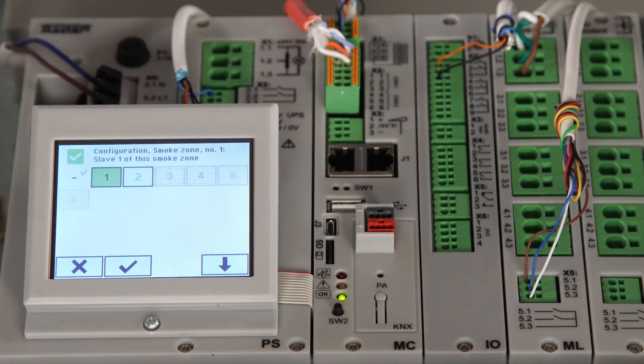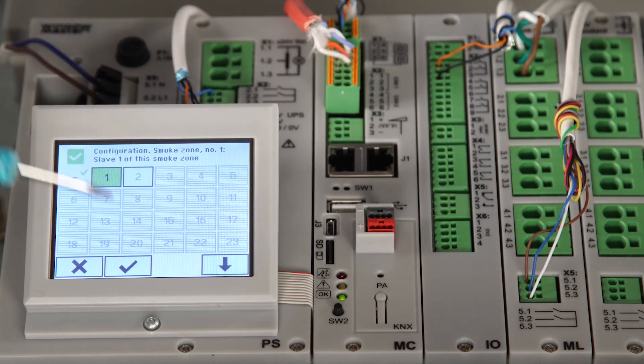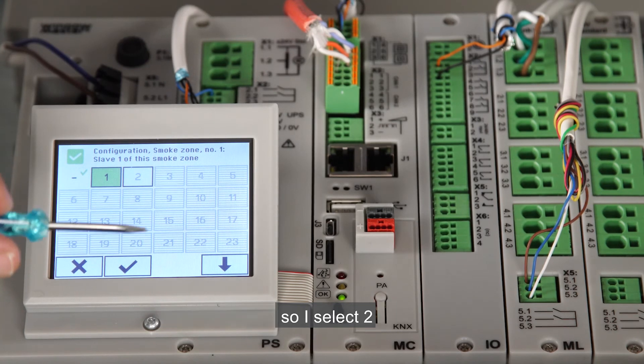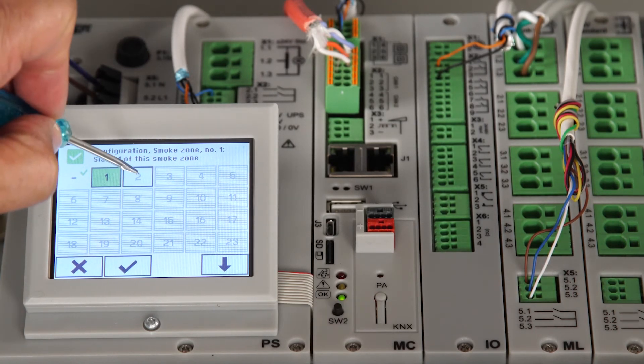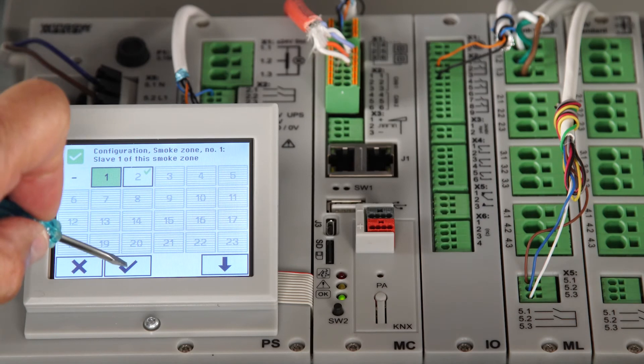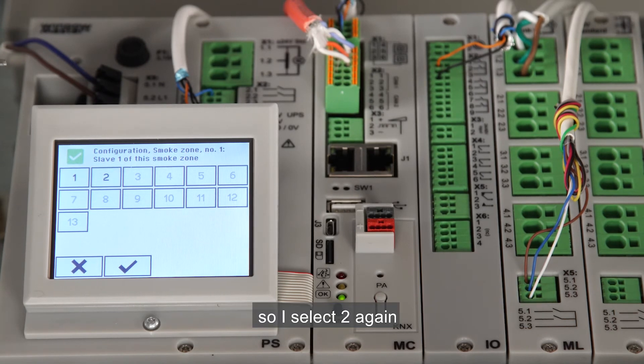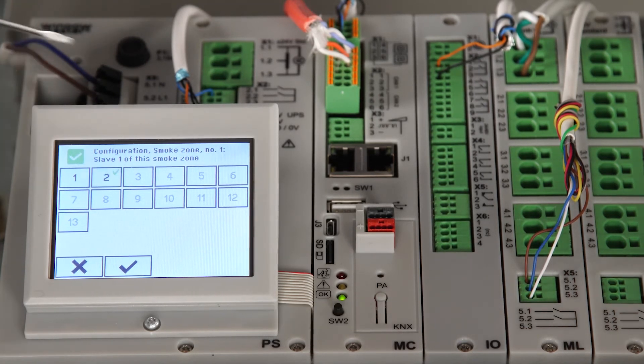I know that the CAN ID in the slave panel is 2, so I select 2. The smoke zone implemented in panel 2 is smoke zone 2, so I select 2 again.